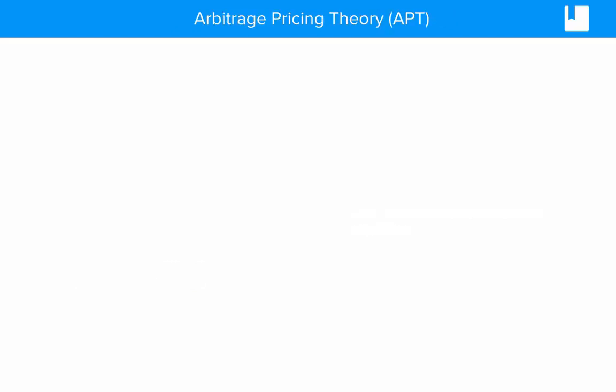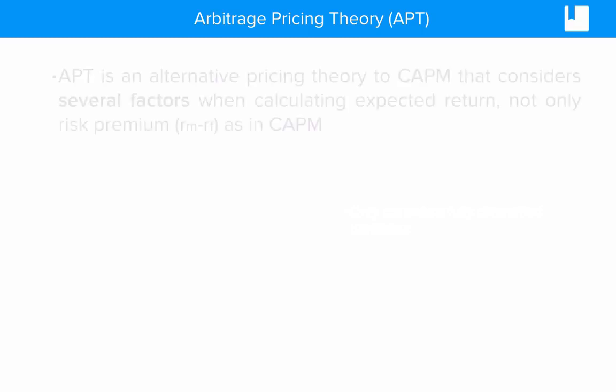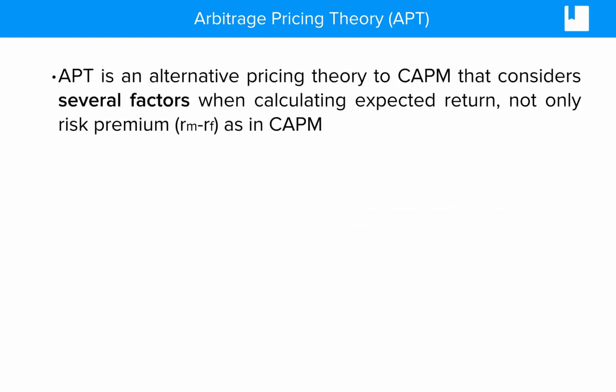Lastly, we're going to cover an extended version of the Capital Asset Pricing Model. This is called the Arbitrage Pricing Theory. The APT is an alternative pricing theory to CAPM that considers several factors when calculating expected return, not only the risk premium, RM minus RF, as what we saw in the Capital Asset Pricing Model formula.